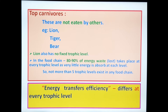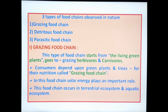Energy transfer efficiency reduces at every trophic level. In nature, 3 types of food chains are observed: the grazing food chain, detritus food chain, and parasitic food chain. We will learn a clear explanation of these 3 types of food chain.